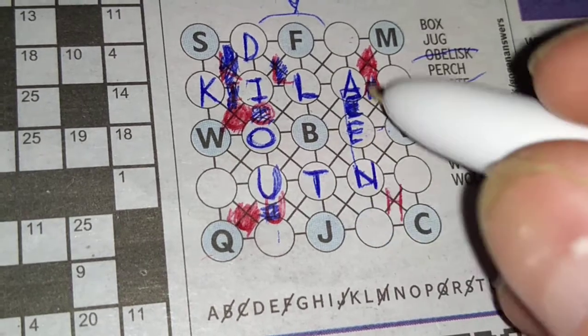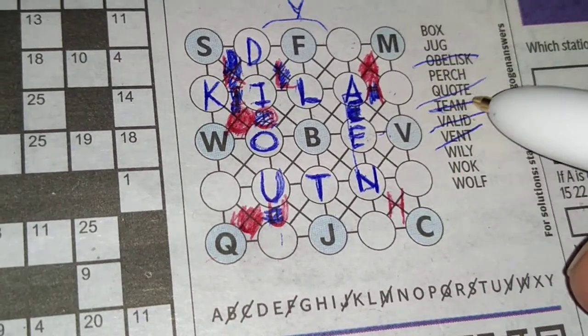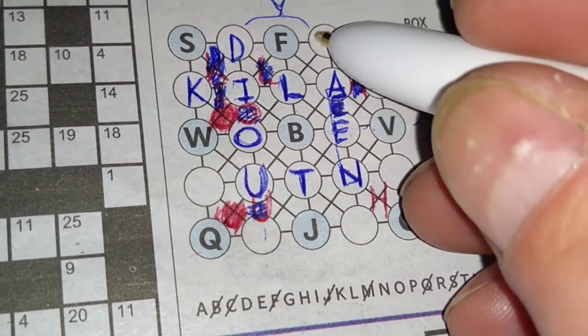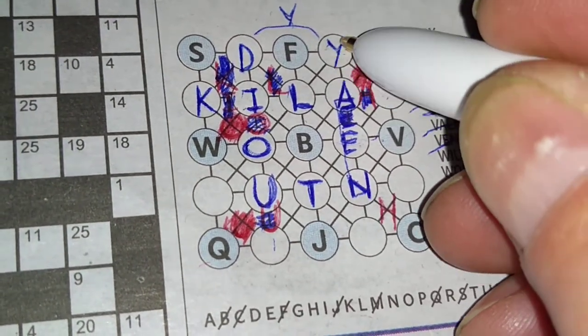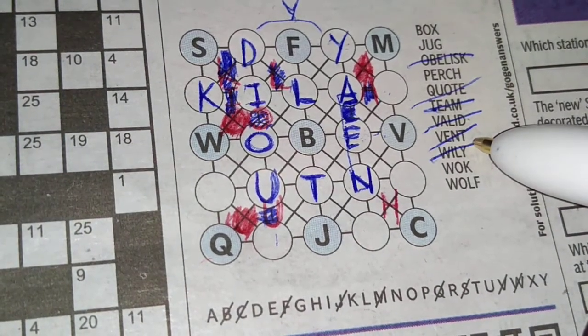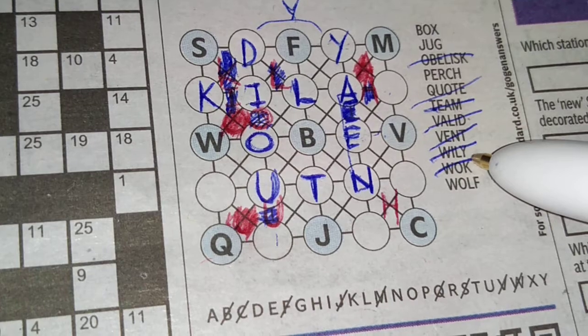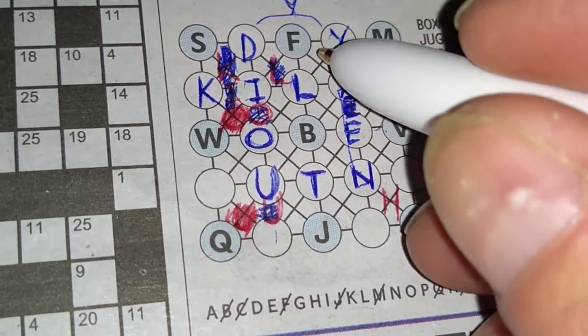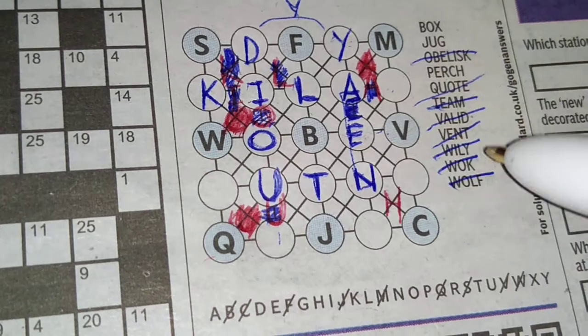We've got team, T, E, A, M, yes, we've got team now as well. Wiley, W, I, L, and that's got to be the Y there now because it's not on the other one. Wok, wolf, W, O, L, F, yes, that's there. I thought I'd gone wrong for a minute there.